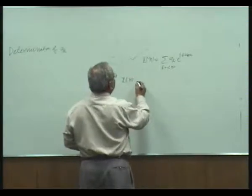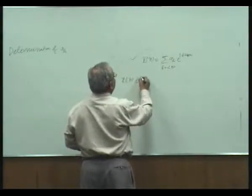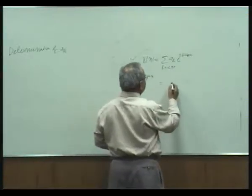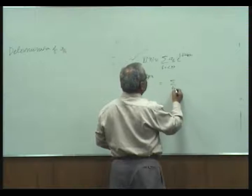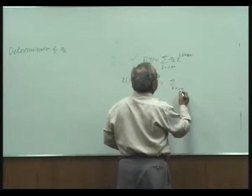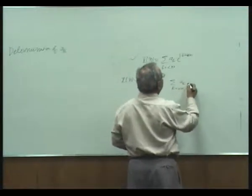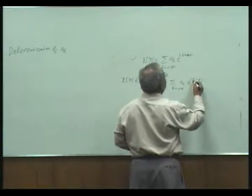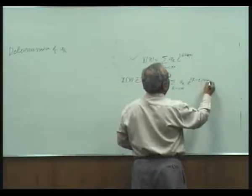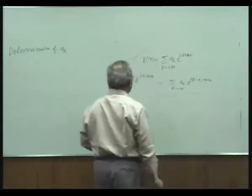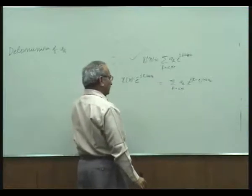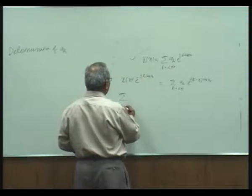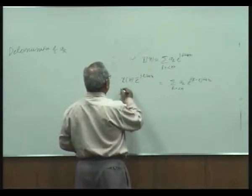Then we get x[n] e^(−jlω₀n), and the right-hand side becomes a summation over k of a_k e^(j(k−l)ω₀n). Now let us sum both sides over n, from n equal to 0 to N minus 1.